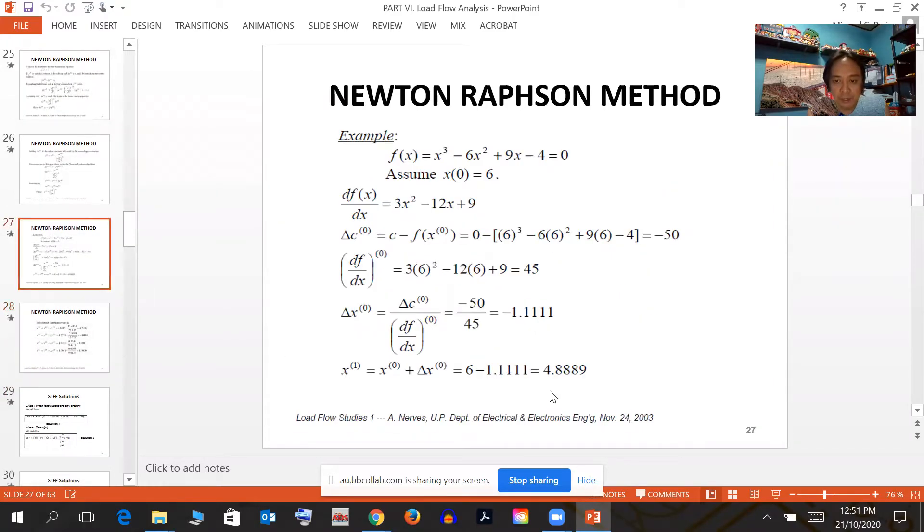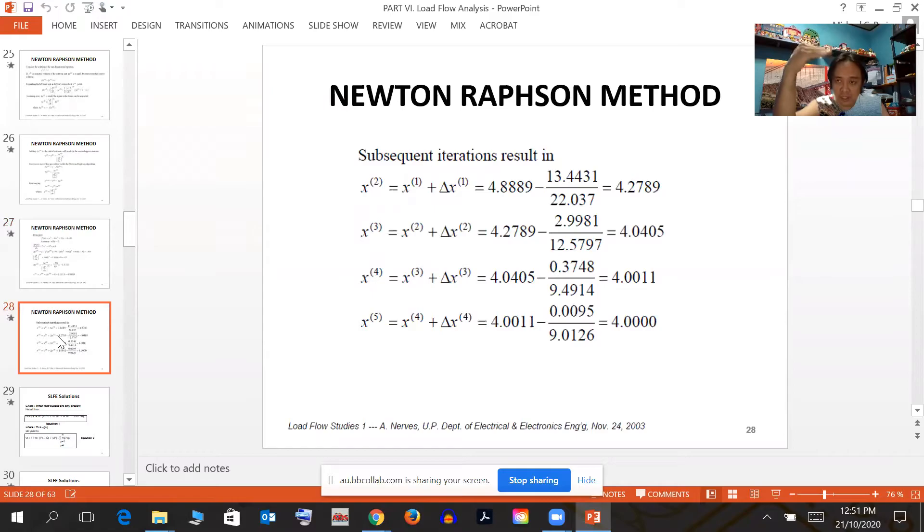You can now get df/dx. Substitute 6: 3 times 6 squared minus 12 times 6 plus 9 equals 45. The root, if we divide delta x by df/dx at the zero iteration (or initial), gives negative 1.1111. The value of x is 4.8889.